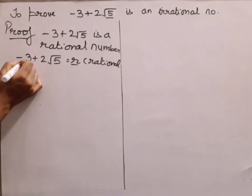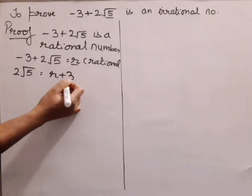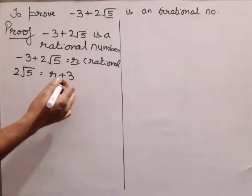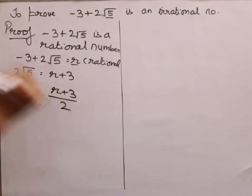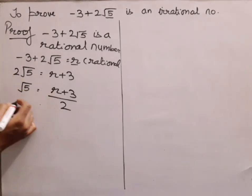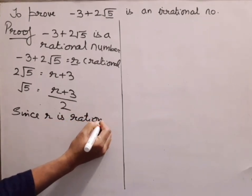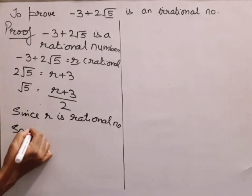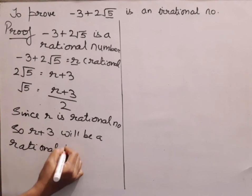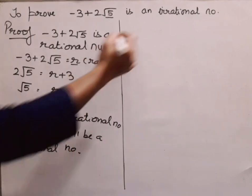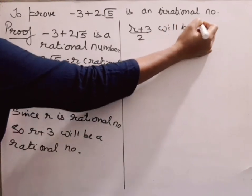Taking -3 to the other side, I get 2√5 = R + 3. Adding any rational number to a rational number gives a rational number, so R + 3 is also rational. Dividing by 2 on the other side gives √5 = (R + 3)/2. Since R is rational, R + 3 is rational, and therefore (R + 3)/2 is also rational.